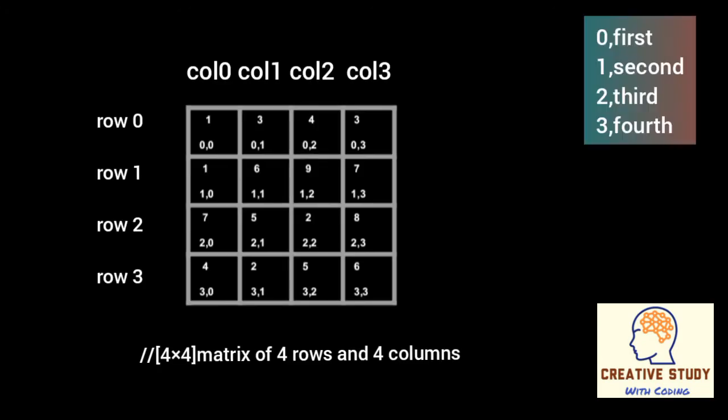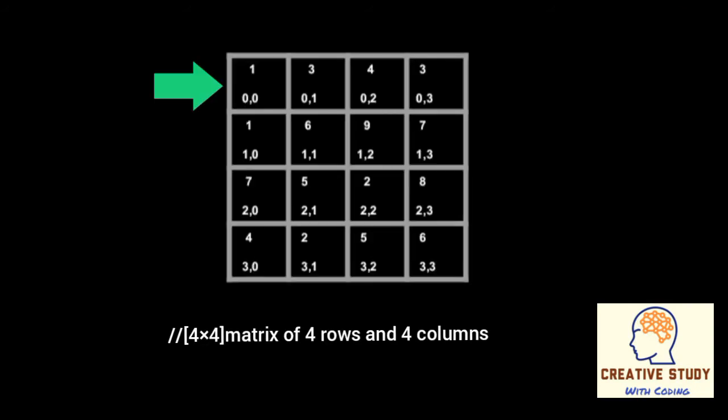Since it is a matrix of four by four, there are four rows and four columns. Row 0 means the first row, row 1 means the second row, row 2 means the third row, and row 3 means the fourth row. Similarly, columns are represented from 0 to j minus one. Index [0][0] means first row, first column.